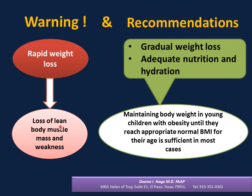Rapid weight loss is highly discouraged because it can cause loss of lean body muscle mass and weakness. Weight loss when necessary should be gradual and should not exceed 1.5% of total body weight, or 1 to 2 pounds maximum per week. The recommendation is gradual weight loss, adequate nutrition and hydration. Maintaining body weight can be sufficient for young children with obesity until they reach an appropriate normal body mass index for their age as they become taller.